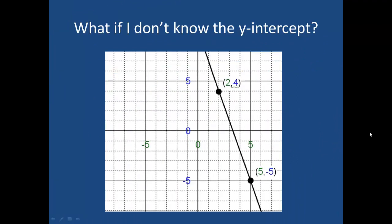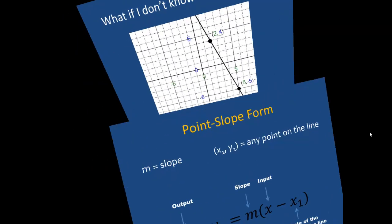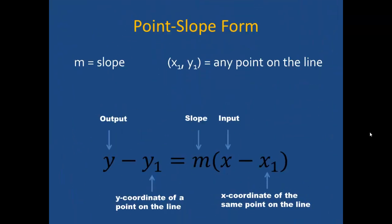Sometimes we don't know what the y-intercept of a line is, but we still need to be able to write the equation, such as in the example shown here. If I don't know the y-intercept, I use the point-slope form of the linear equation.